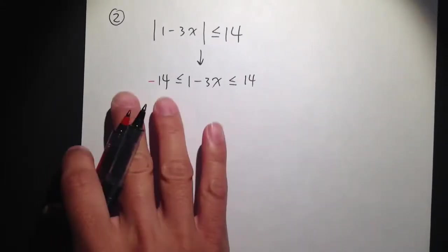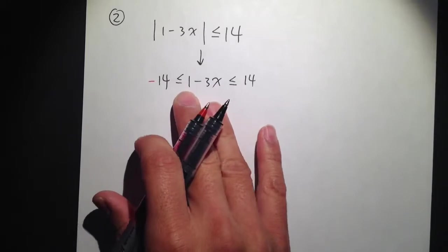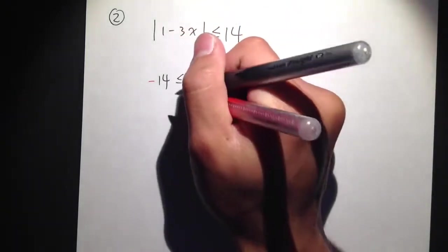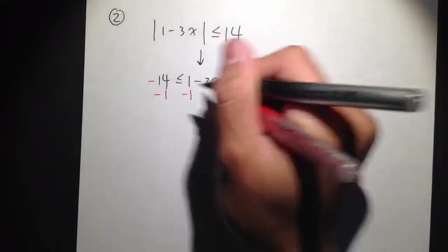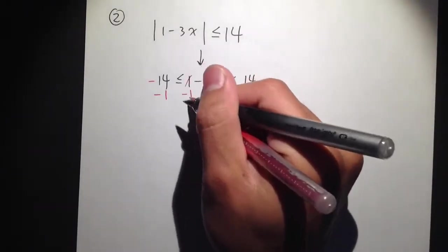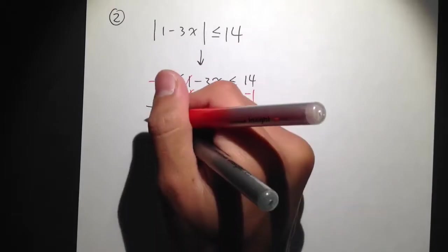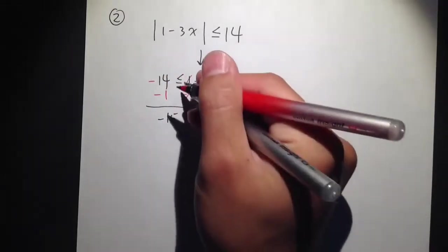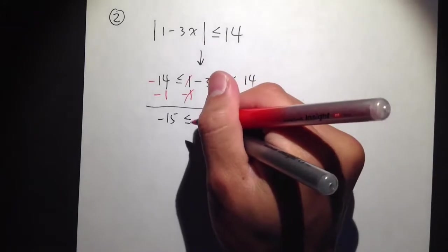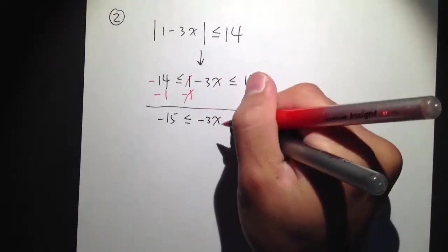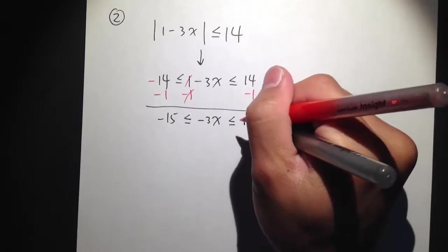Now we just need to solve for x — isolate x. I need to subtract 1 from all three parts: subtract 1 here, subtract 1 here, subtract 1 there. The 1s cancel. Then negative 14 minus 1 is negative 15, less than or equal to, and we bring down negative 3x, less than or equal to, and 14 minus 1 is 13.